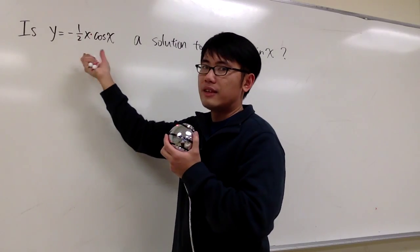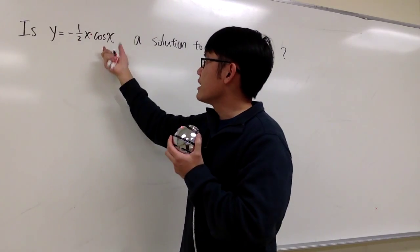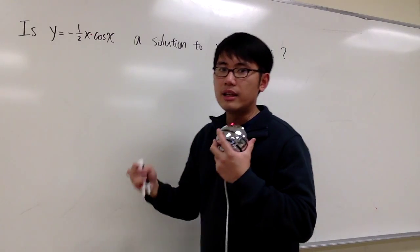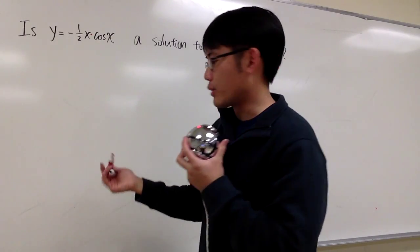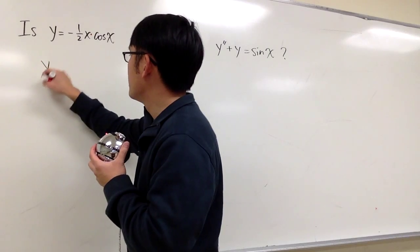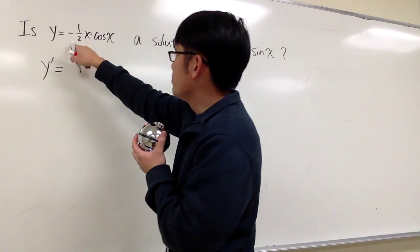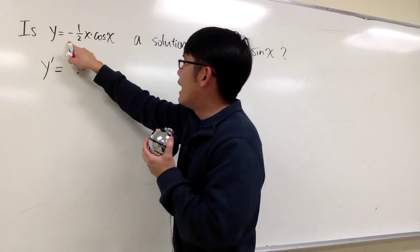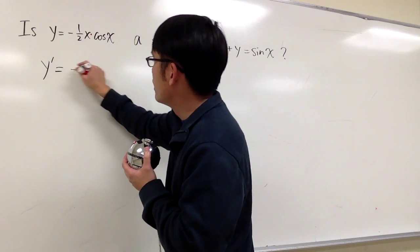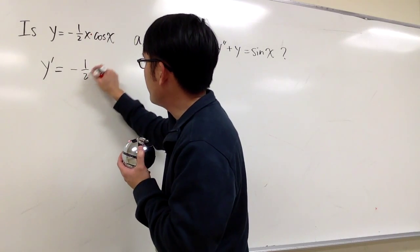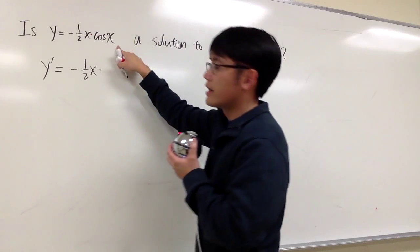Negative one-half x is the first function, and the second function is just cosine x. To differentiate this, I have to use the product rule. So the first derivative — by the product rule — I will keep the first function, negative one-half x, and multiply by the derivative of the second.